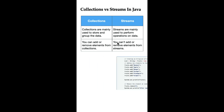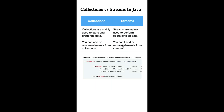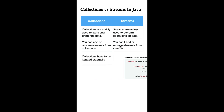You can add or remove elements from Collections, but you cannot add or remove elements from Streams. A Stream consumes a source, performs operations on it, and returns the result.